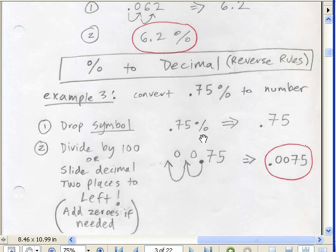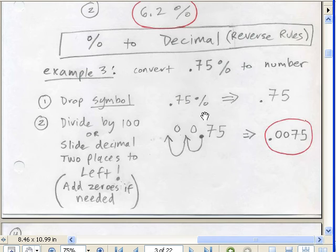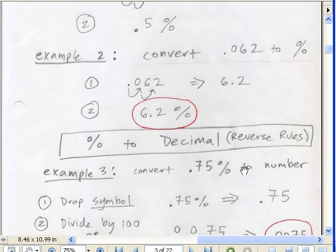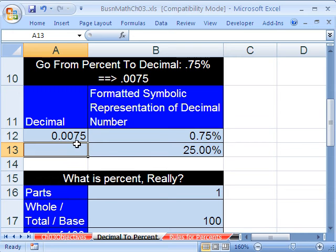Let's do an easy one. Convert 25% to a number. Drop the symbol, slide the decimal, zoop, zoop, and we get 0.25. So this one's pretty easy.